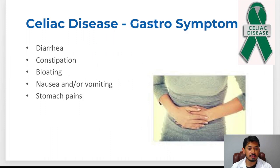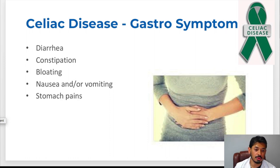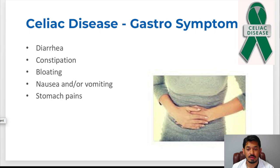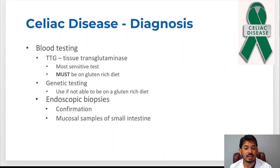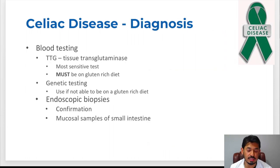The GI symptoms of celiac disease can range across many different things — whether it's diarrhea, constipation, bloating, nausea, vomiting, and even stomach pain. The way we diagnose celiac disease can be through different testing, whether it's blood testing, genetic testing, or even endoscopic biopsies. It is a combination of these different tests that gives us the diagnosis of celiac disease or not.